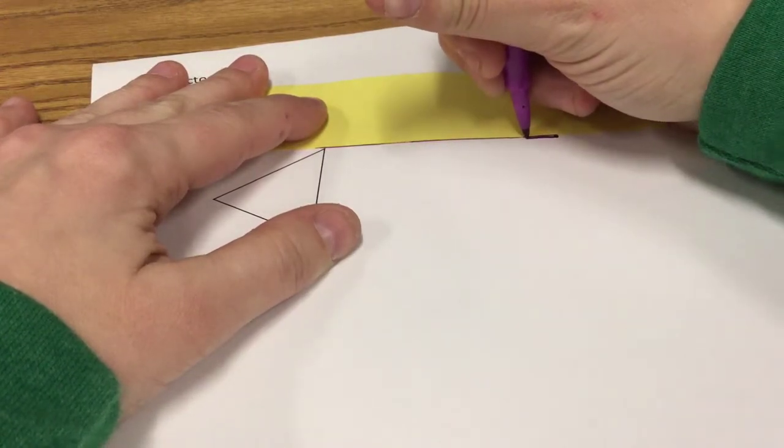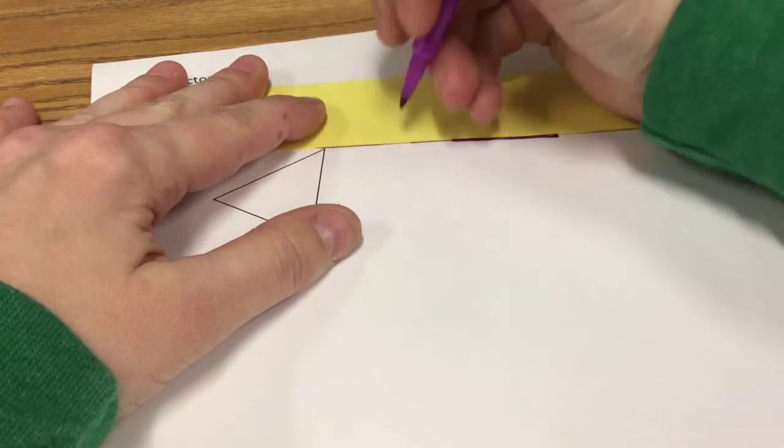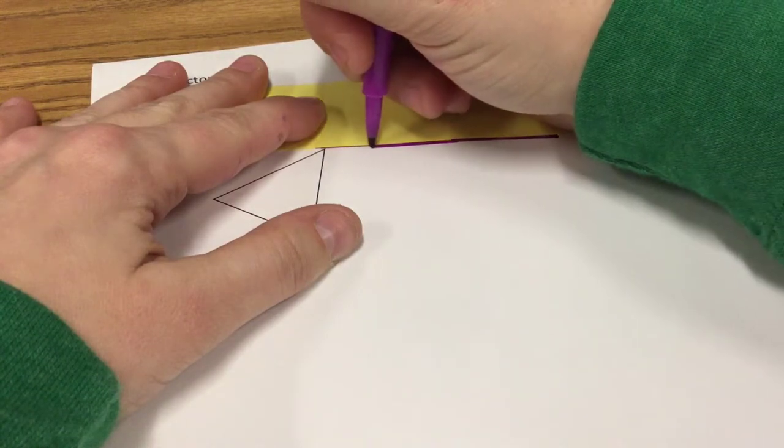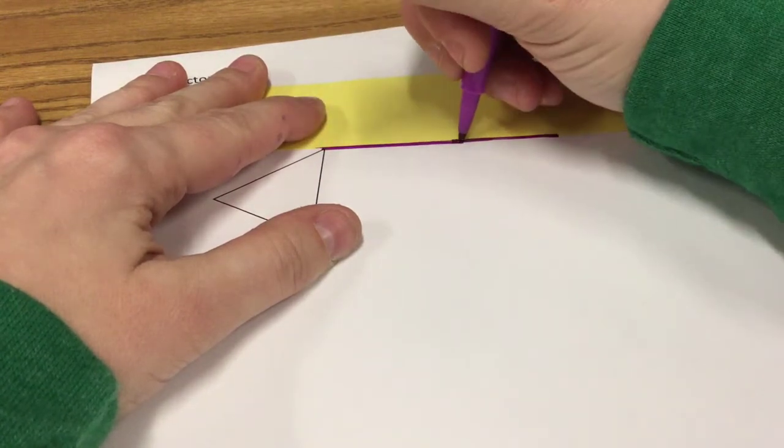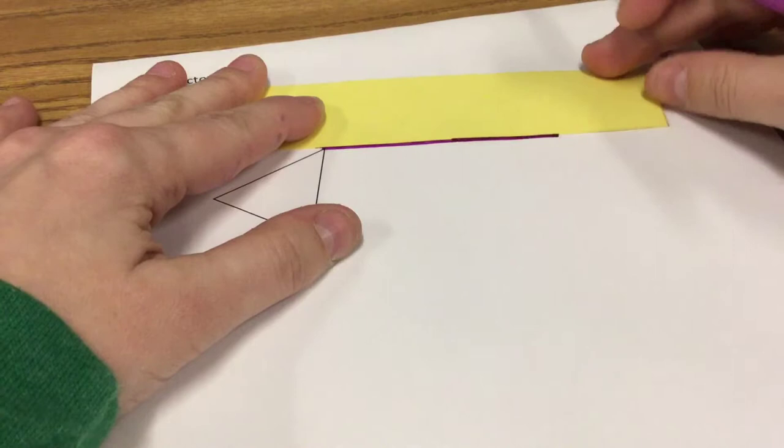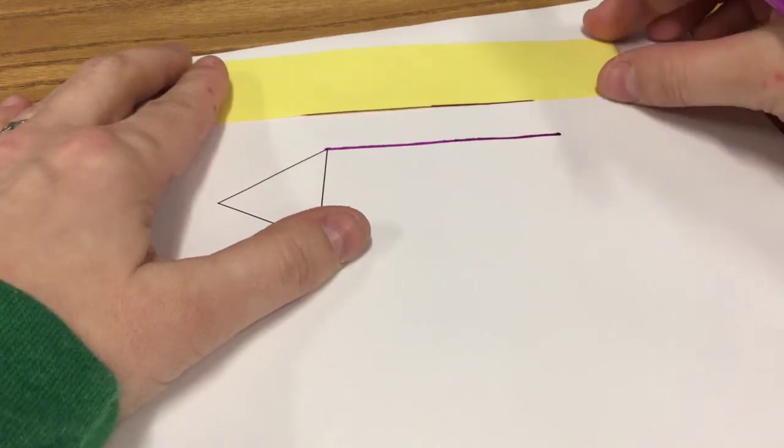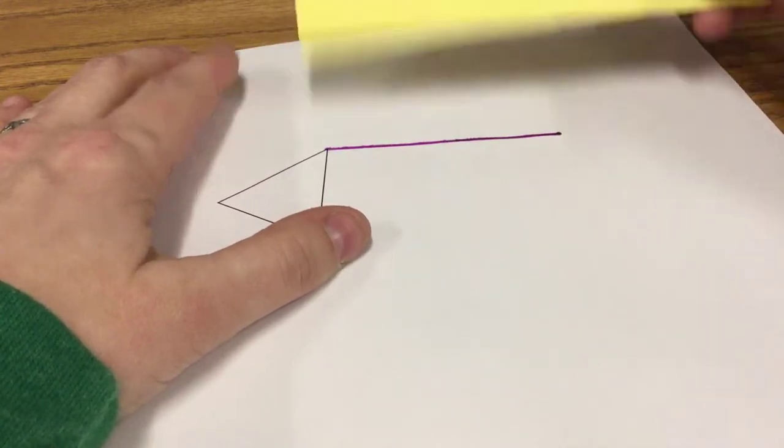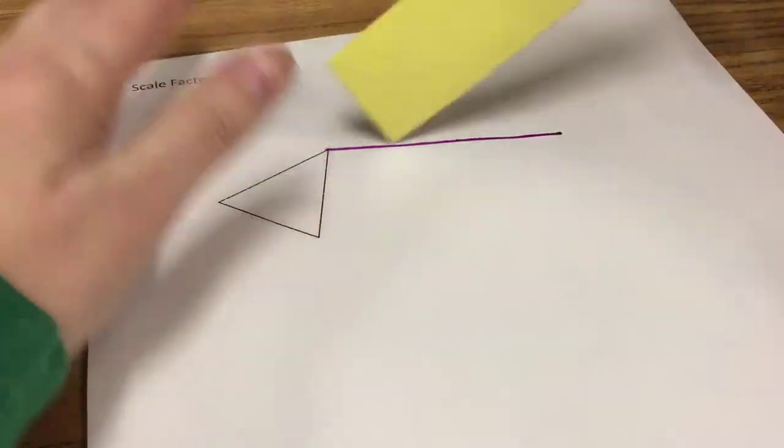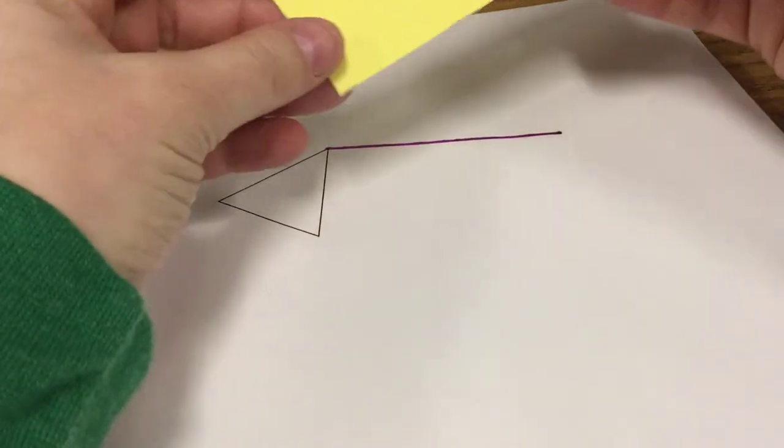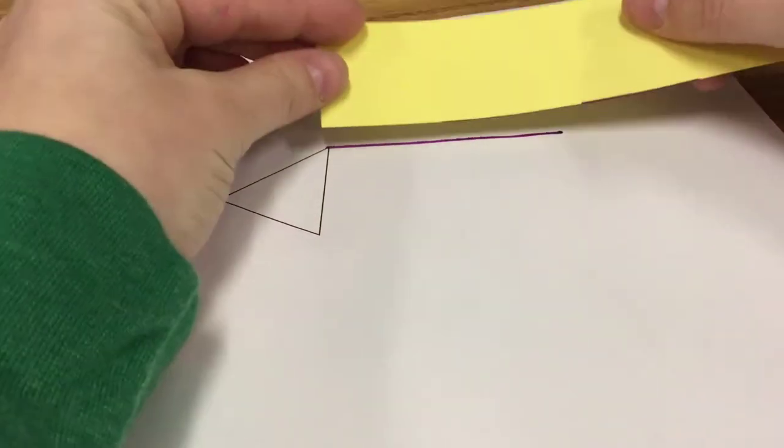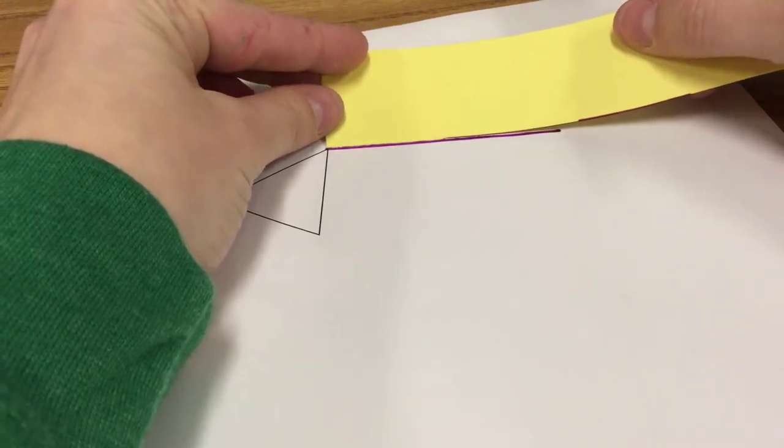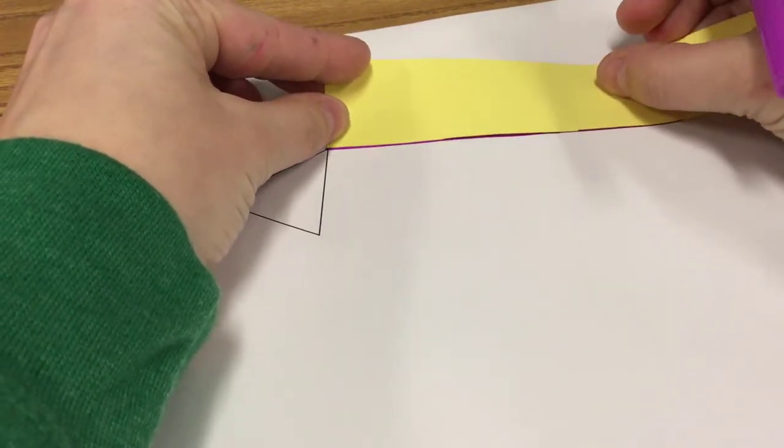So we're going to draw a line from the center of dilation to the vertex. Now we need to measure the distance or to mark how far away the vertex is from the center. So put the corner of your paper on the vertex of your triangle and mark where that center is.